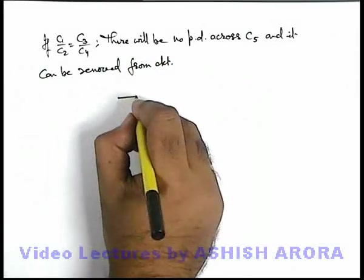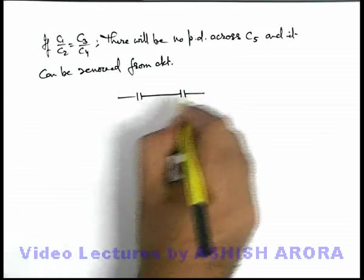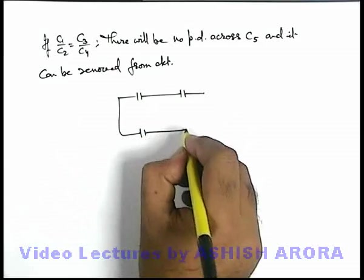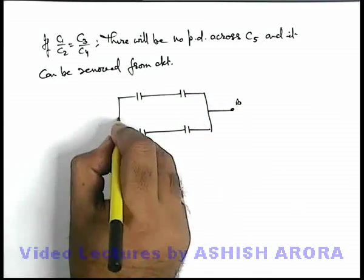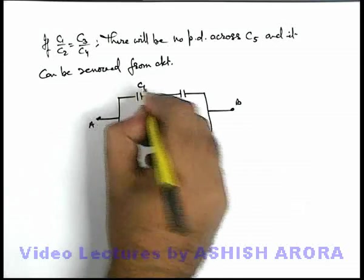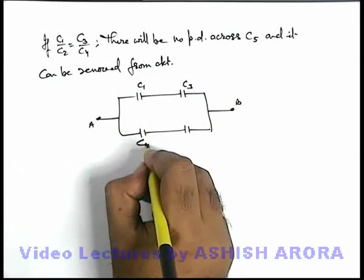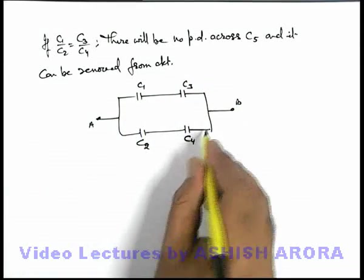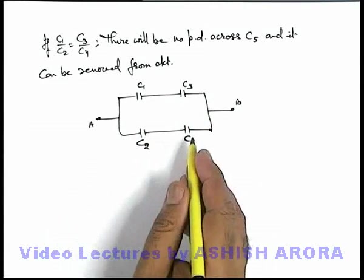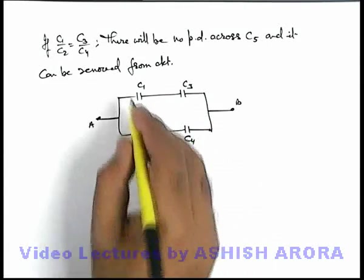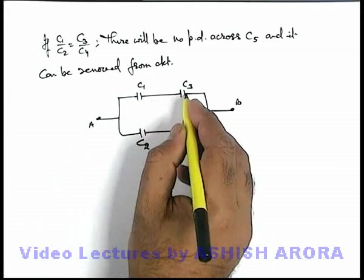And under this situation the circuit will look like this situation when only there are 4 capacitors across terminals A and B, which are C1 C3 C2 and C4. And if the middle capacitor is removed, its equivalent capacitance can be directly calculated by taking C1 and C3 in series combination.